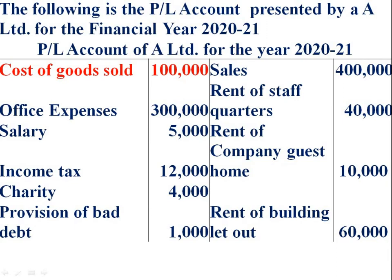First item: cost of goods sold — it is a normal business expenditure. Office expenses — normal business expenditure. Then salary — normal business expenditure.